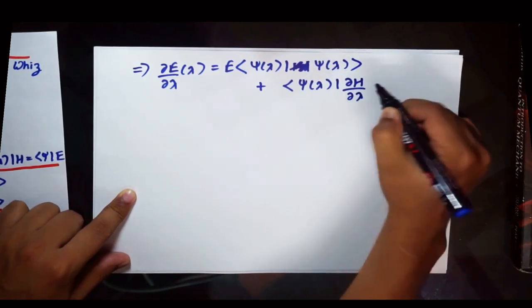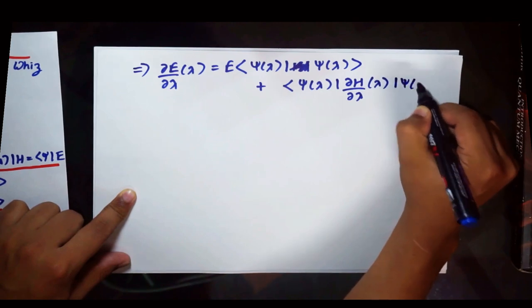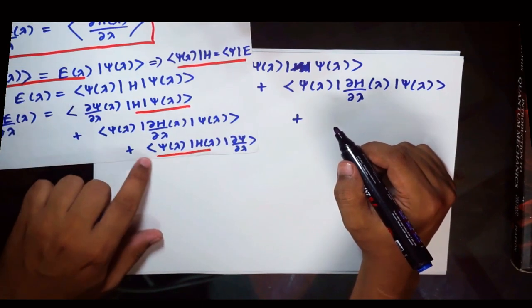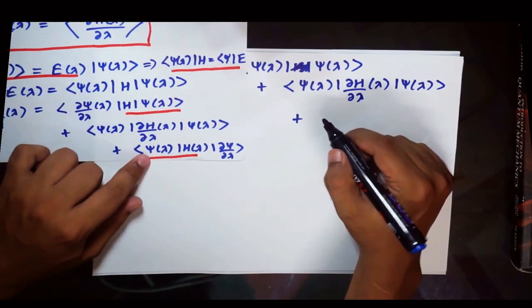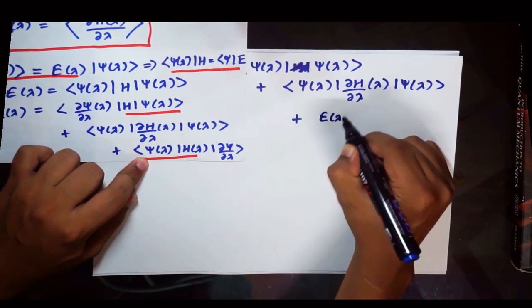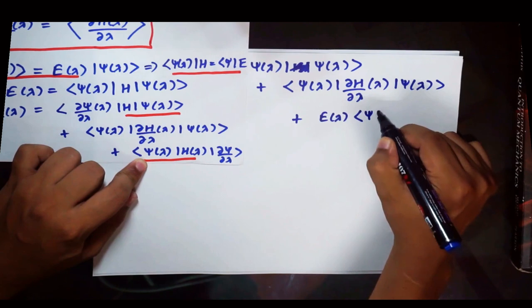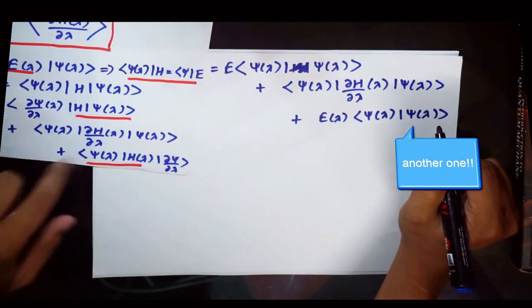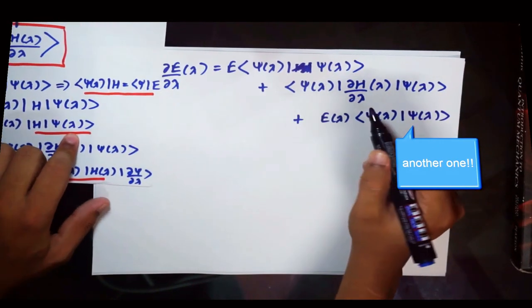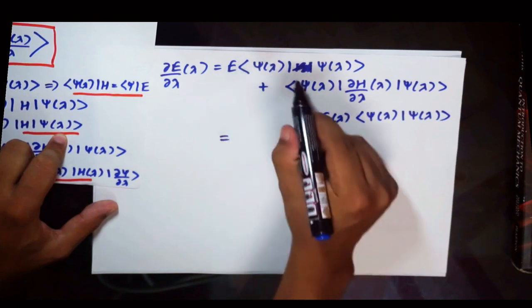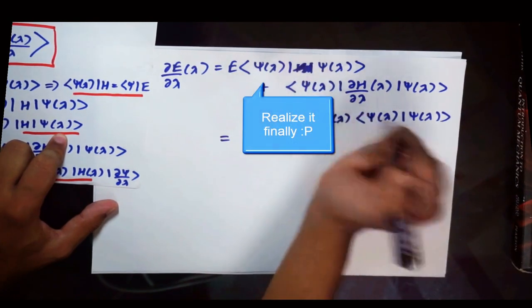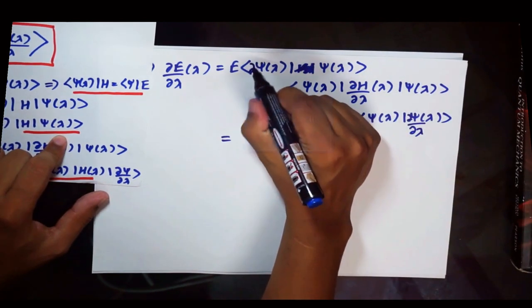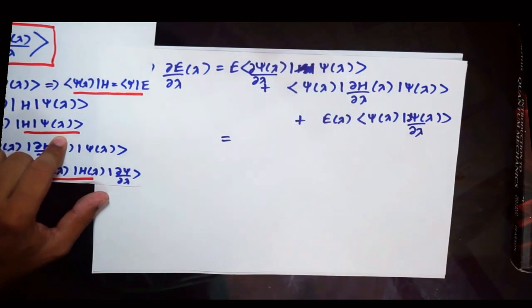Del H by del lambda, that is psi of lambda. And finally we will use this one and we will plug this right here to get E of lambda, psi of lambda, psi of lambda.